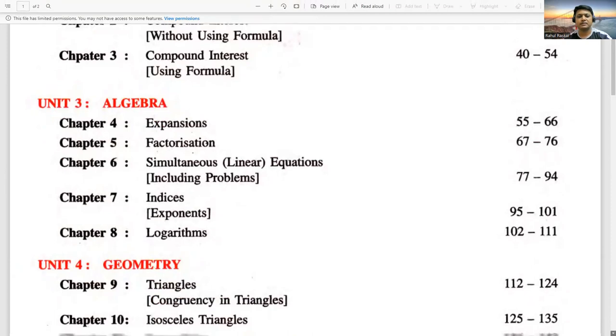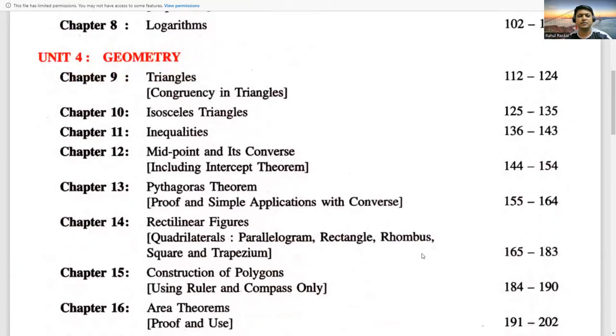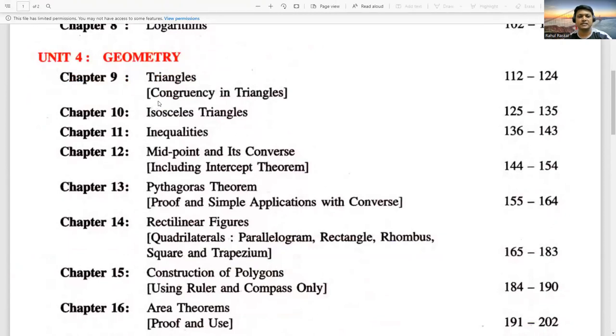Then next unit four, it is related to geometry in which we will see triangles, congruency in triangles, different tests we will see in that: side-side test, angle-angle test like that. Then chapter 10 has isosceles triangles. We know that if two sides of the triangle are similar then we can call it an isosceles triangle.